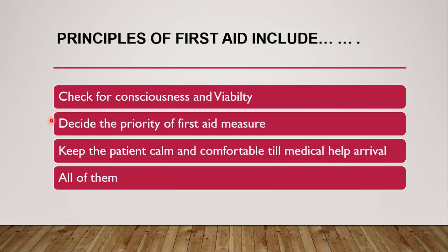Next question: principles of first aid include — checking the consciousness and viability of the patient, deciding the priority of first aid measures, keeping the patient calm and comfortable until medical help arrives, or all of them? The correct answer is all of them. According to the principles of first aid, without wasting time or asking unnecessary questions, the first aider should find out the cause of injury and check whether the patient is conscious, unconscious, or dead or alive.